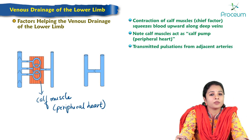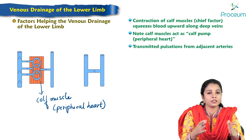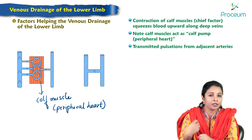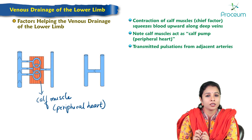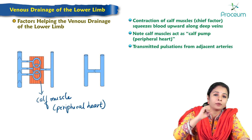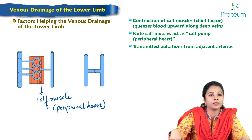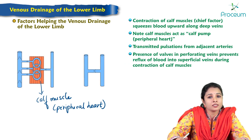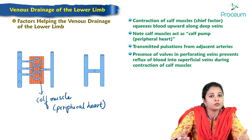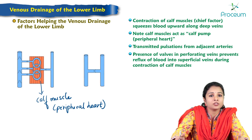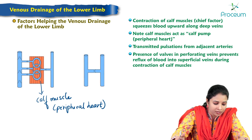The second factor is transmitted pulsations from the adjacent arteries. These veins are usually accompanied by arteries, which pulsate and squeeze the adjacent veins. Third is the presence of valves — these veins contain valves, and valves in the perforating veins prevent reflux of blood into the superficial veins during contraction of the calf muscle.